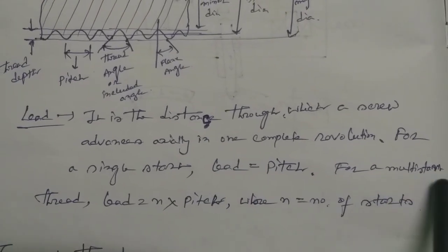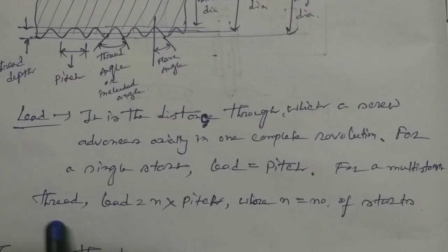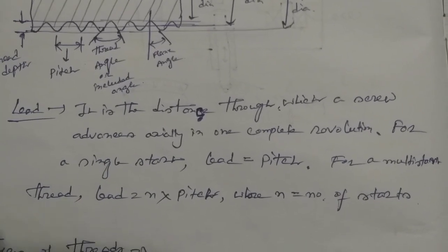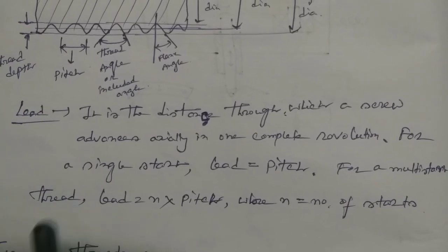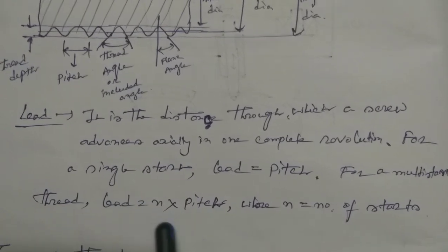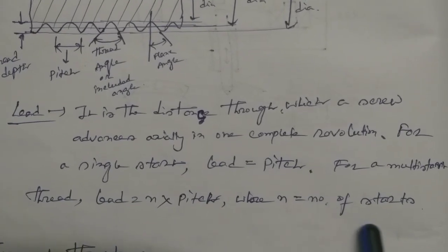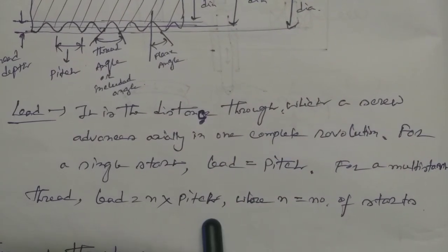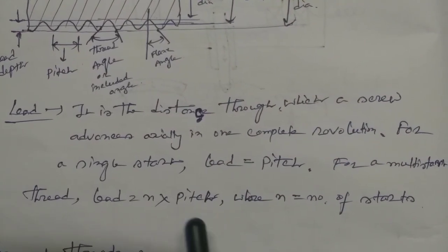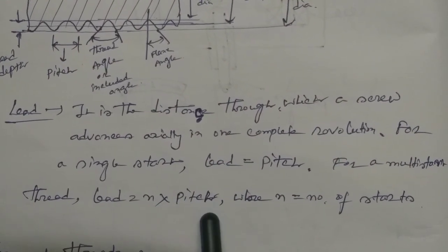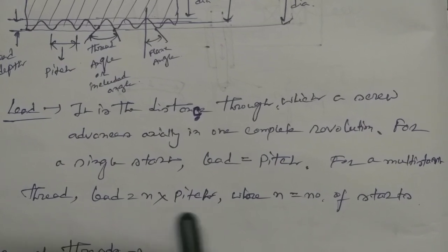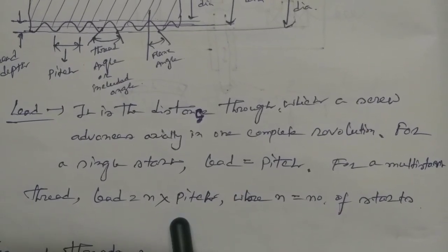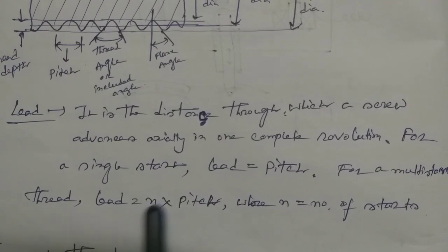For a multi-start thread, lead is equal to n times pitch, where n is the number of starts. For a double-start thread, lead equals 2 times pitch; for a triple-start thread, lead equals 3 times pitch. This is very important.